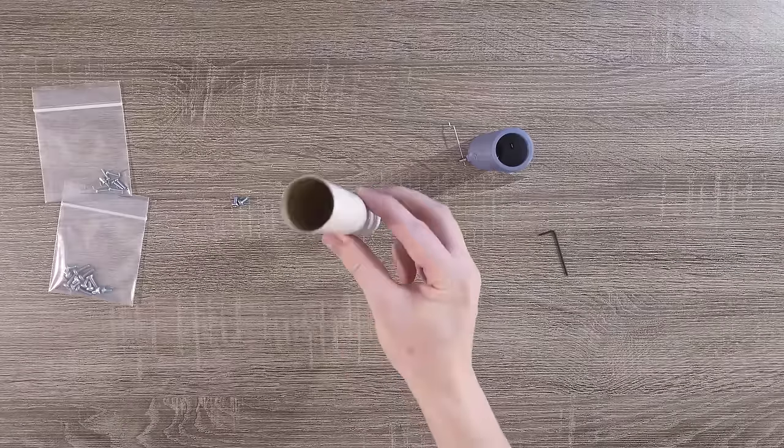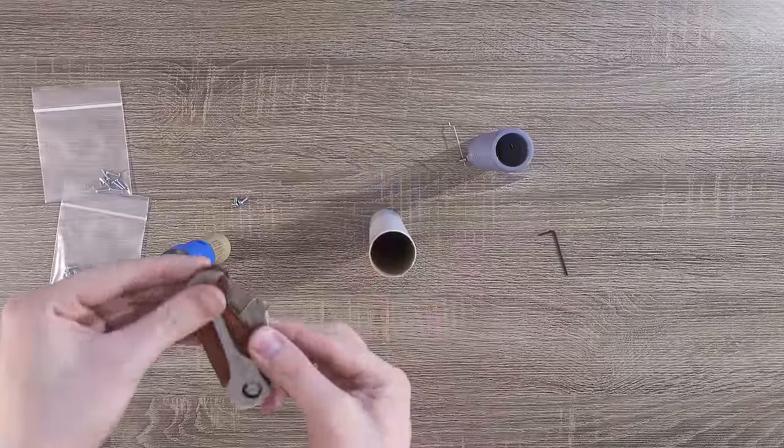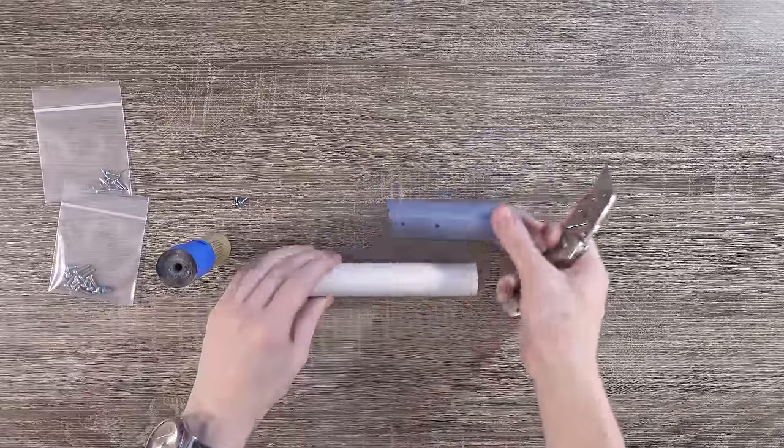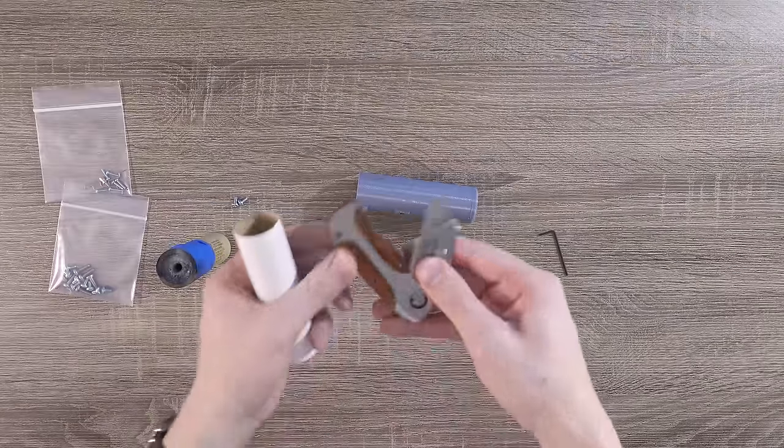Next up, the motor mount needs a liner. Grab a piece of 29 mm motor tube and a spent motor if you have one. Cut a section from the motor tube just about 10 cm in length. We want it to be slightly longer than the plastic part.